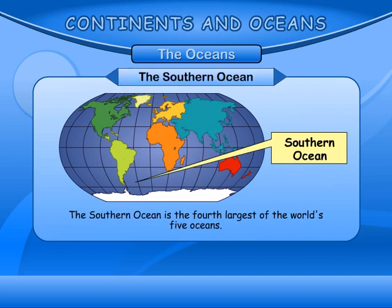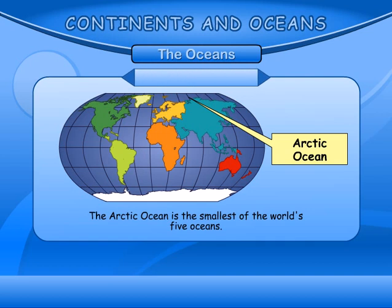The Indian Ocean is the third largest of the world's five oceans. The Southern Ocean is the fourth largest of the world's five oceans. The Arctic Ocean is the smallest of the world's five oceans.